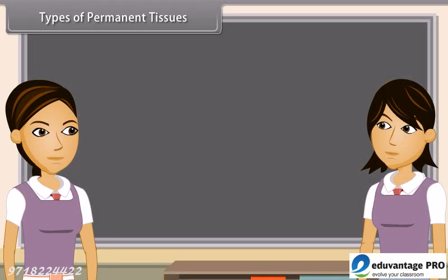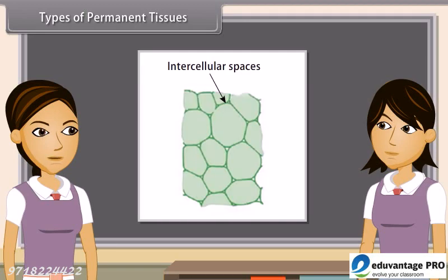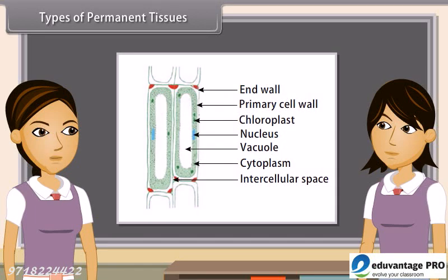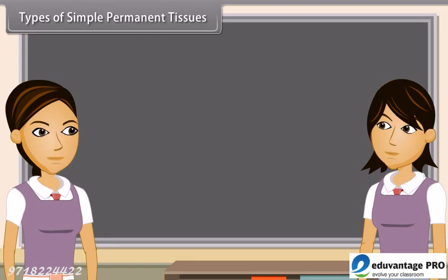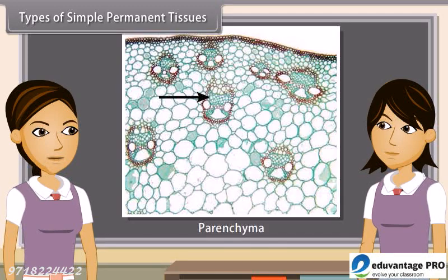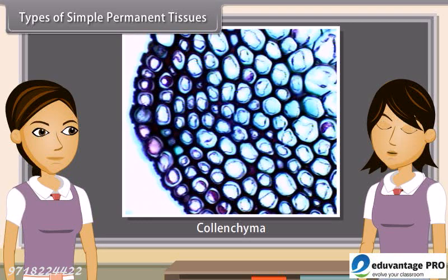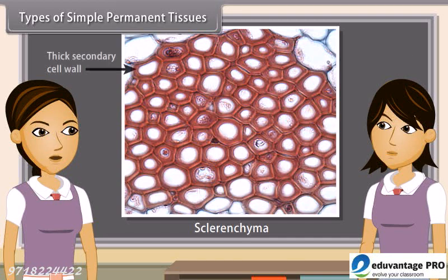Permanent tissues are of two types on the basis of the nature of cells: simple permanent tissues and complex permanent tissues. Simple permanent tissues are composed of cells which are functionally and structurally similar. On the basis of nature of cells, simple permanent tissues are of three types: parenchyma, colenchyma, and sclerenchyma. Parenchyma is made up of cells with thin primary walls that retain their protoplasm. Sclerenchyma is made up of cells with lignified secondary walls that have lost their protoplasm at maturity — that is, they are dead.